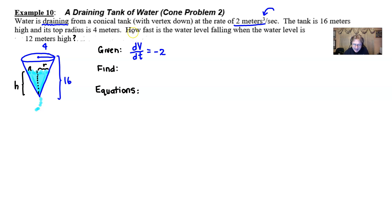We are trying to find how fast is the water level falling, so that is dh/dt. There's your water level indicated in the picture. And we want to find that specifically when the height of the water is 12.